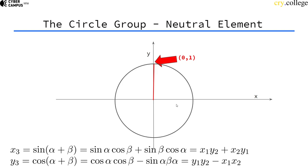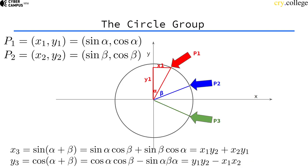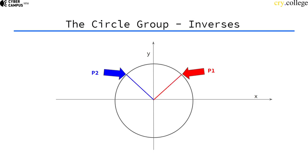So then, if we want a group, we also need inverses. And what would be the inverses? Well, if I add this angle to this angle, then we would have a full circle again, and I would end up at the neutral element.